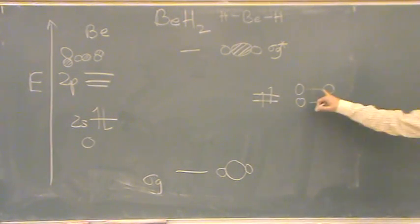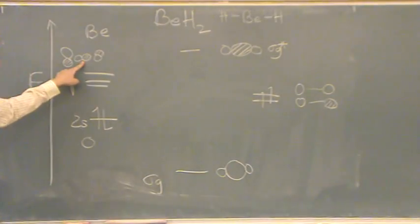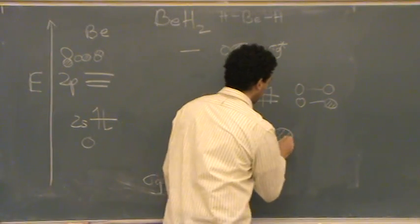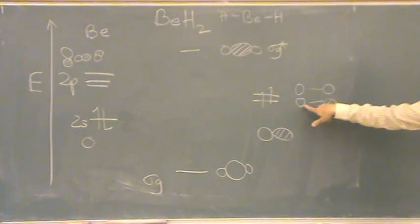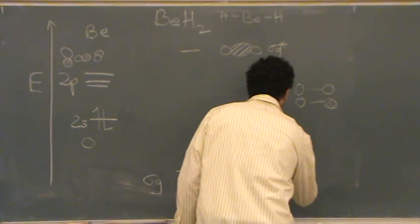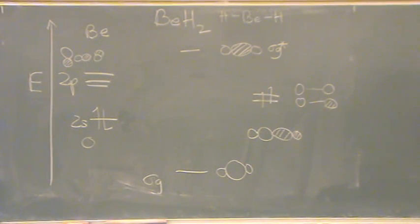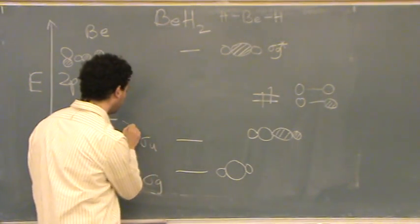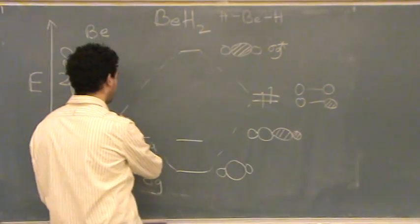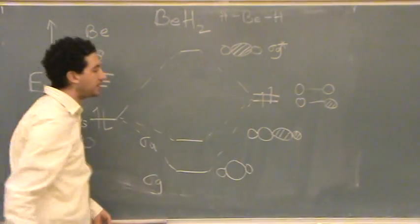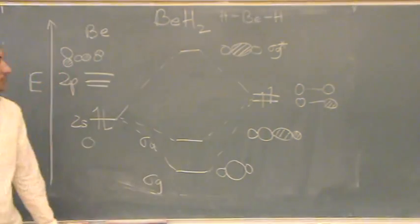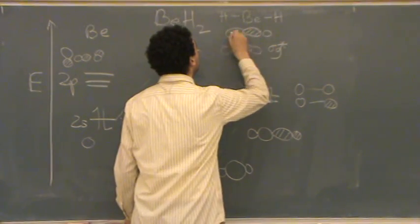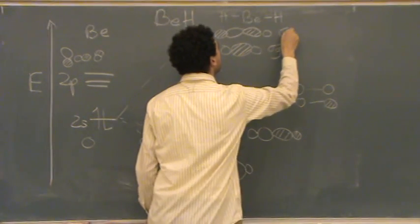The other one that could possibly interact with these two hydrogens is the P orbital on the same axis. If you draw that P orbital, the only hydrogens that fit well are one on each side — again a bonding orbital, slightly higher energy. We call that a sigma-U. And it would have its anti-bonding counterpart, the sigma-U star.